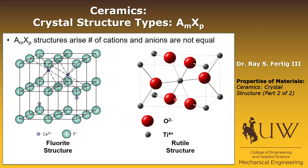In the rutile structure, this is a tetragonal cell defined by the titanium ions, which is a little different than the fluorite structure, which was primarily defined by the fluorine ions. The red atoms show the oxygen. So that's the rutile structure. Again, there are far more structures than we could possibly cover here, but I'm just giving you a flavor of some of the complexity that emerges.